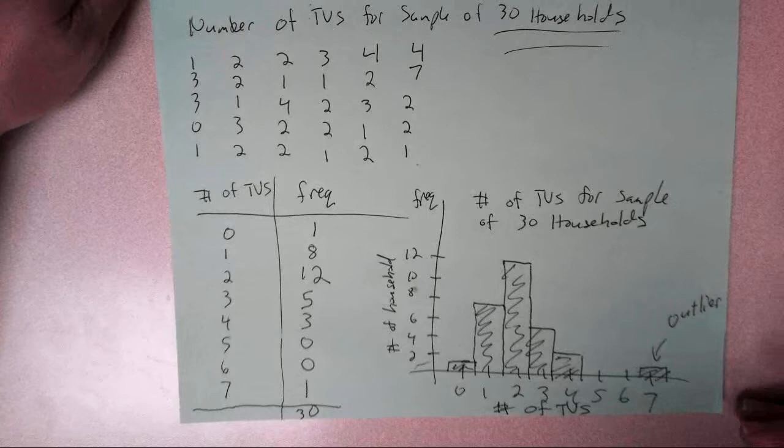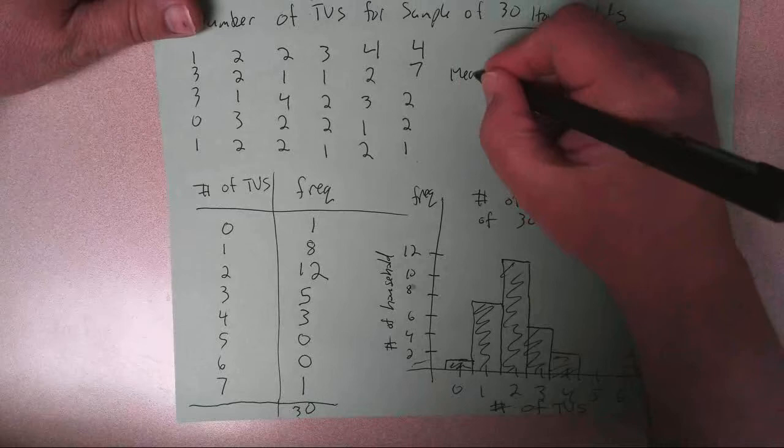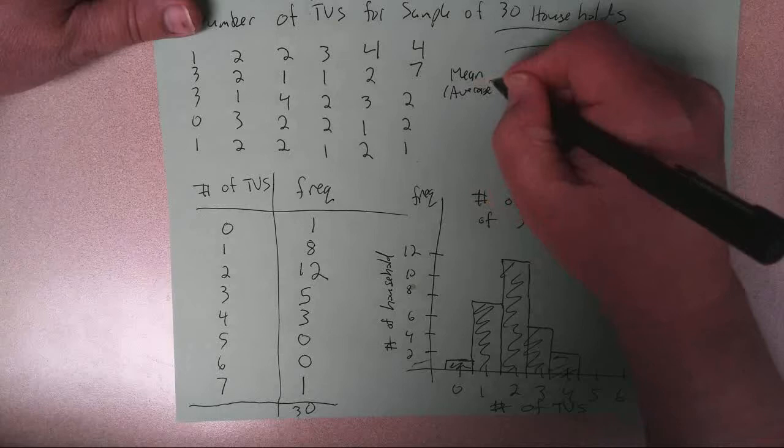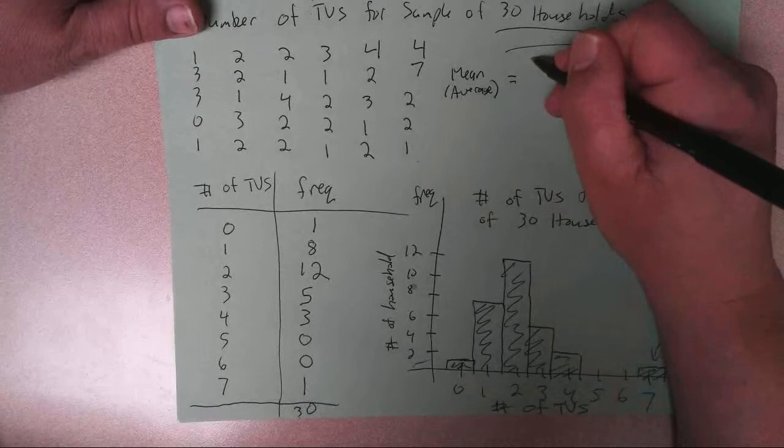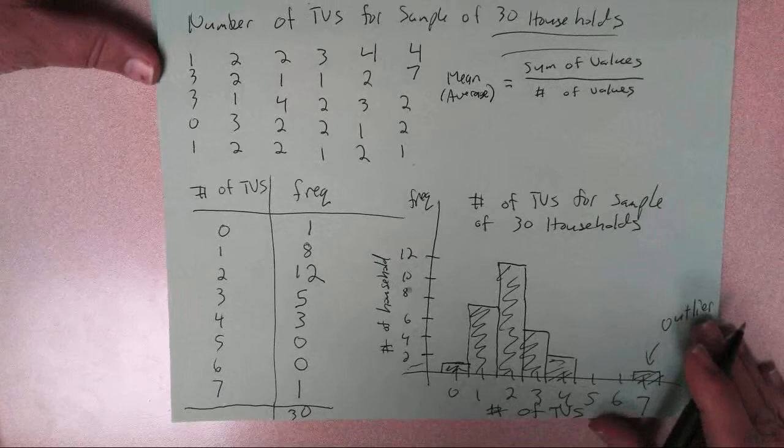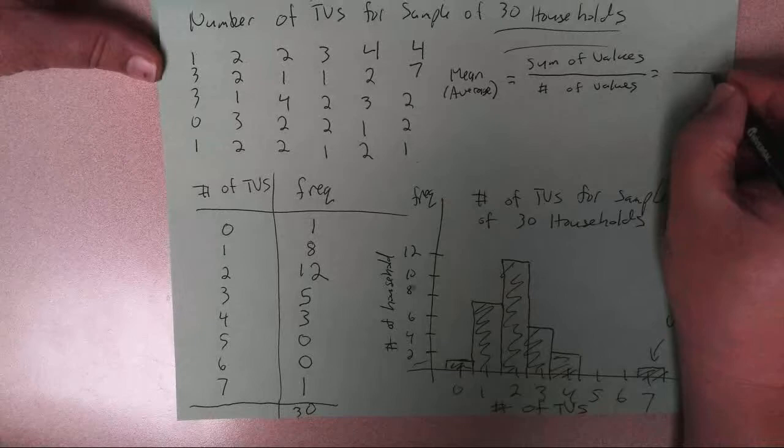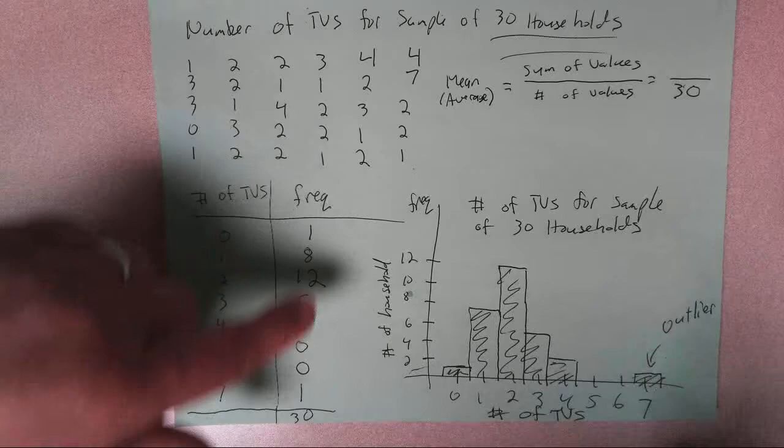Let me talk about just a couple other basic statistics ideas using this example. You can find the mean of a data set. The mean, or I should say the average. Normally when you learn it to begin with, you call it the average, but the mean, that's the same thing. What you do is you take the sum of values in the data set divided by the number of values. So to find the mean here, the number of values would be 30.